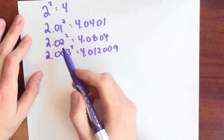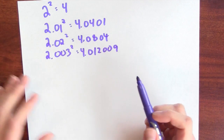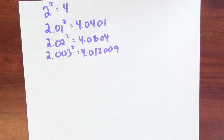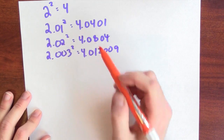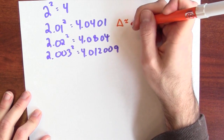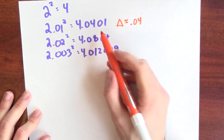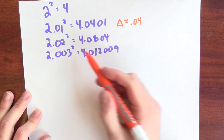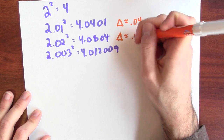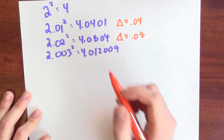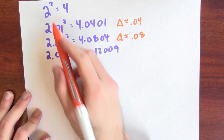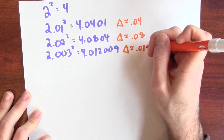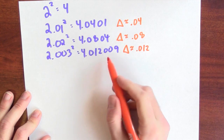I've wiggled the inputs and seen how the outputs are affected. All the outputs are close to 4, but not exactly 4. When I wiggled the input from 2 to 2.01, the output changed by about 0.04, and a little bit more. When I wiggled from 2 to 2.02, the output changed by about 0.08. And when I wiggled from 2 to 2.003, the output changed by about 0.012.